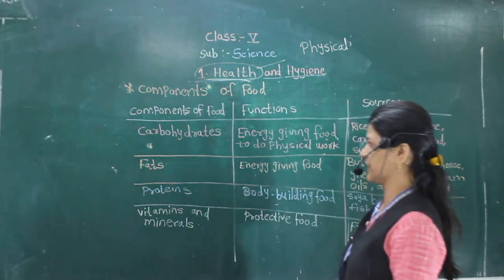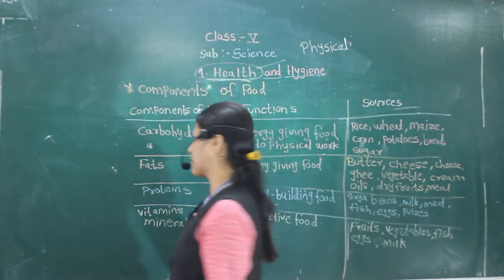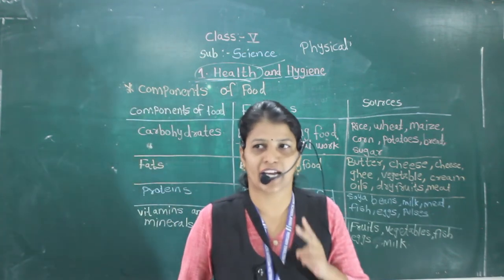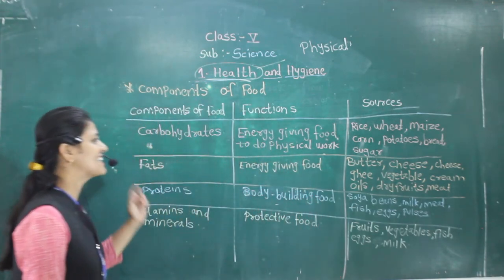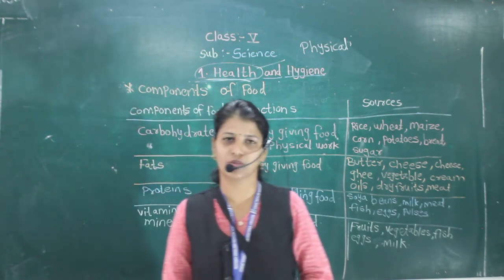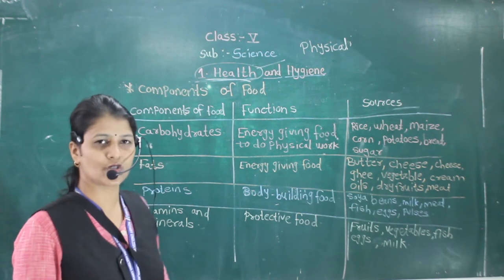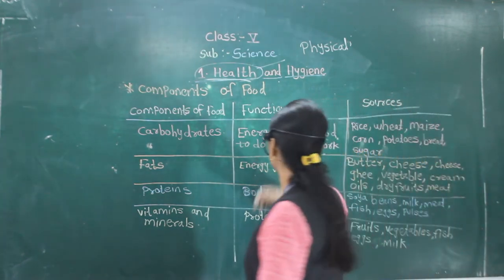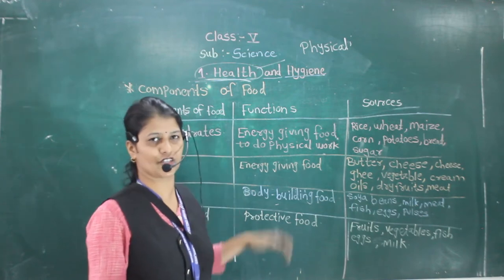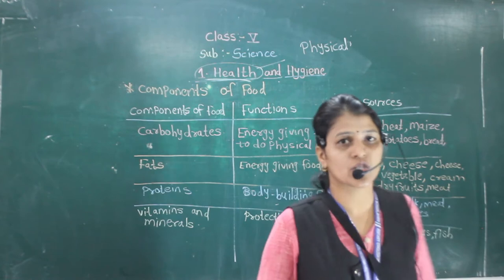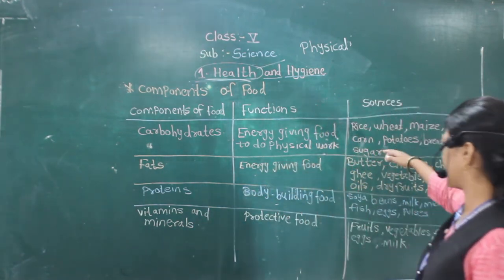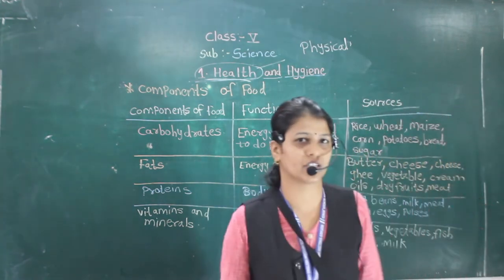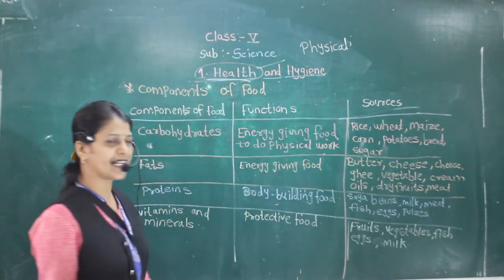The first component is carbohydrates. Carbohydrates are also called energy-giving food. There are mainly two types of carbohydrates: sugar and starch. Carbohydrates are essential to do physical work. The sources of carbohydrates are rice, wheat, maize, corn, potato, bread, and sugar.